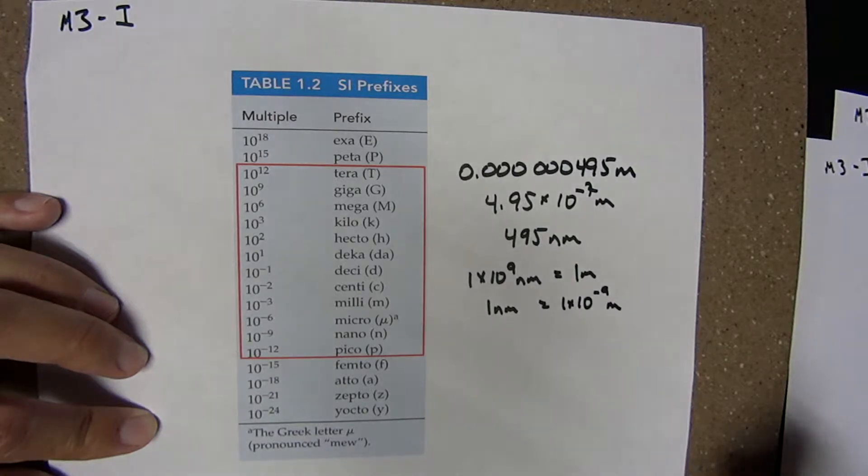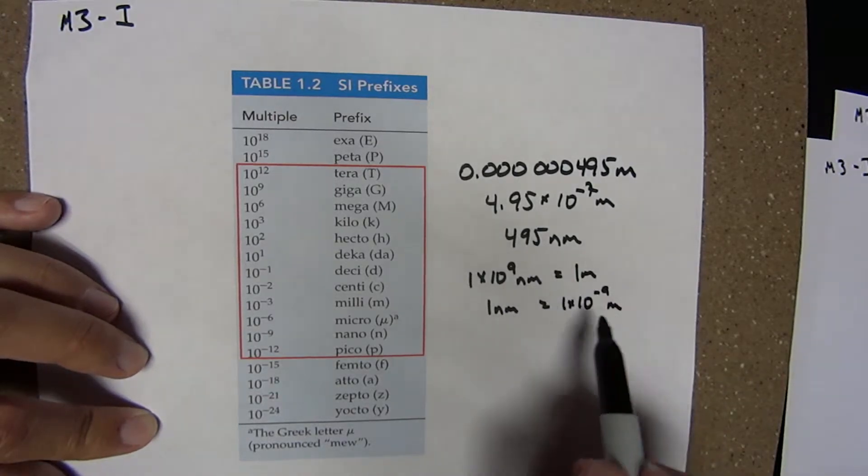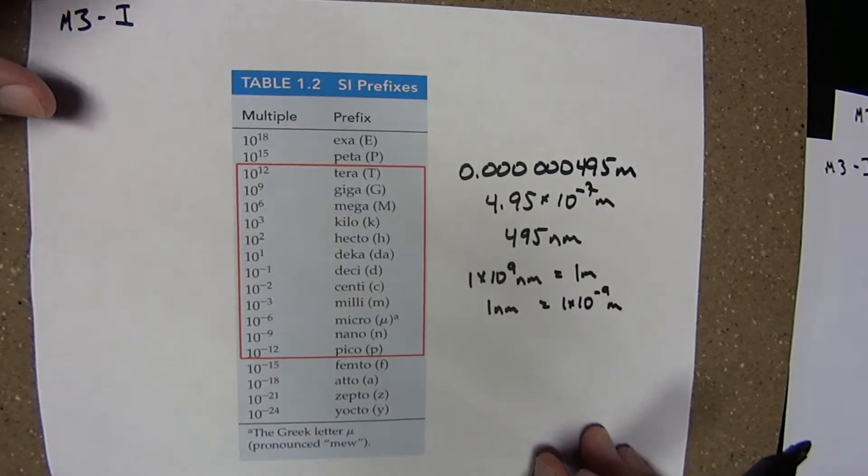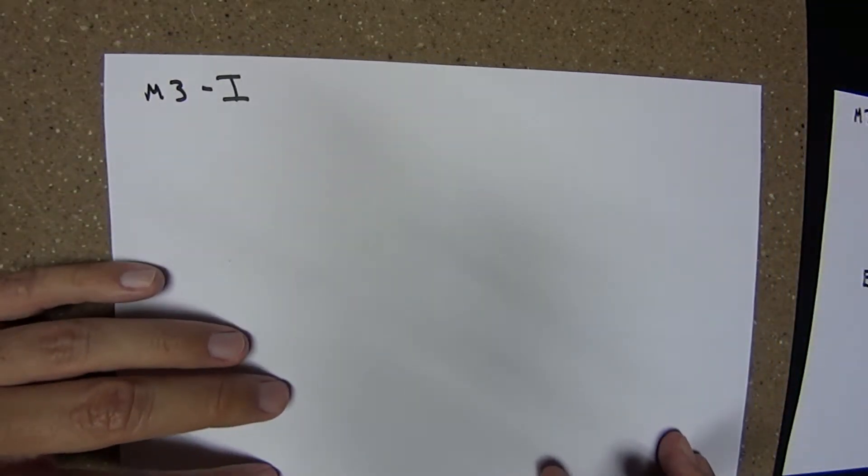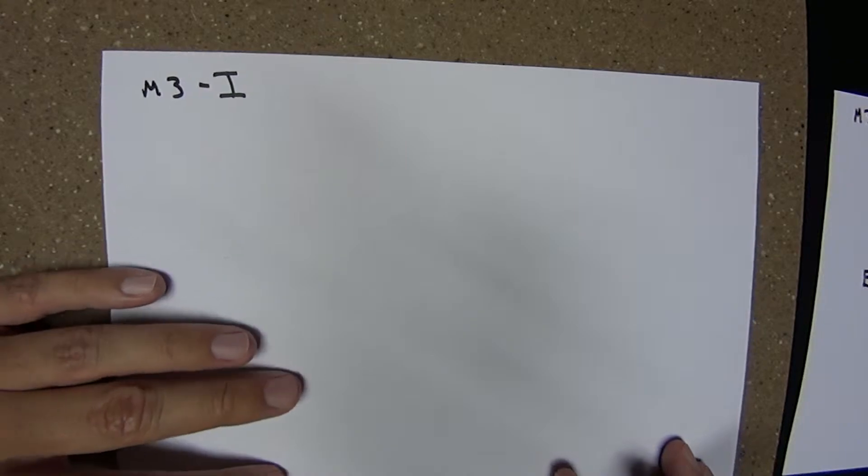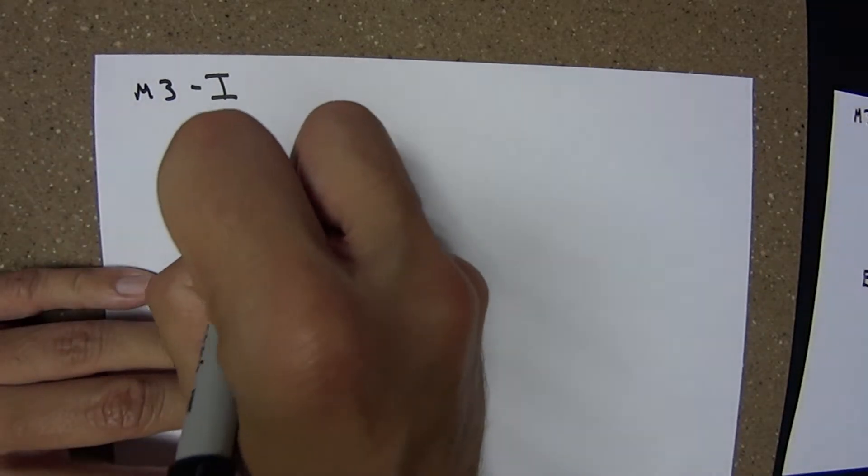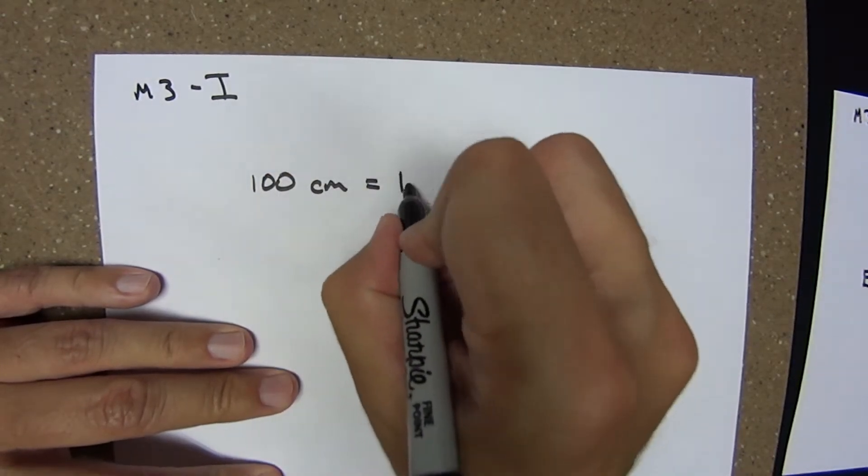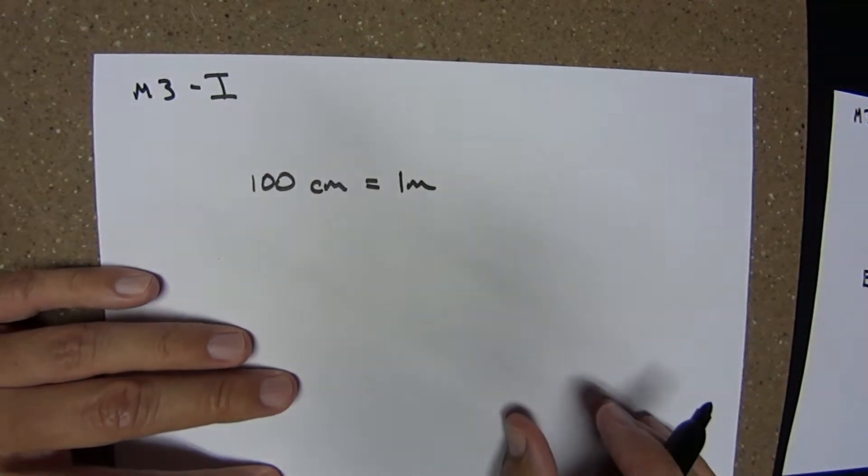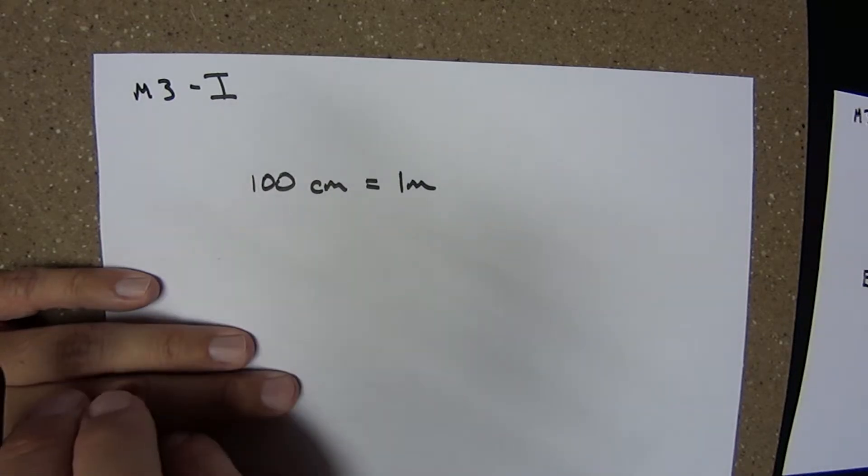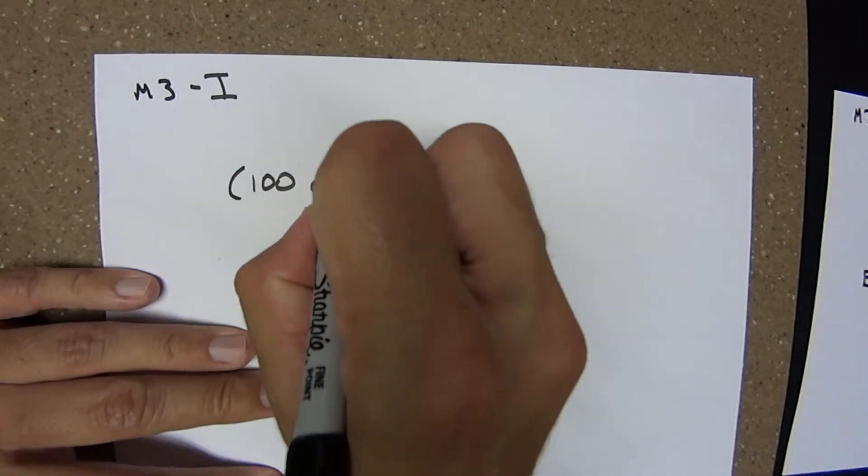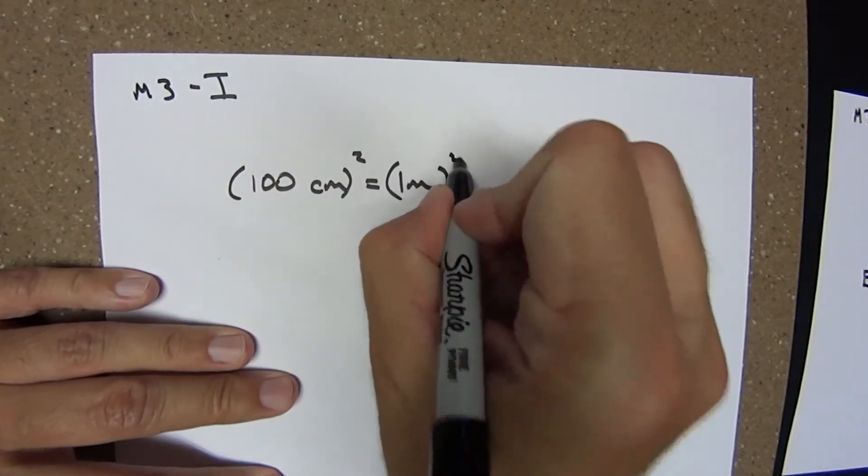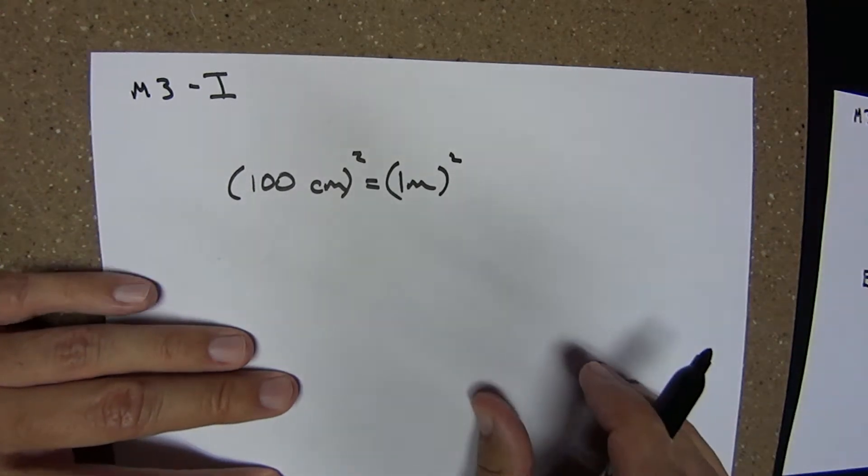As an important aside, if you know a length conversion like these, you can easily calculate a corresponding area or volume conversion. Let's look at a couple examples. Using SI prefixes, 100 centimeters equals 1 meter. If we square both sides of this equality, we get an area conversion.